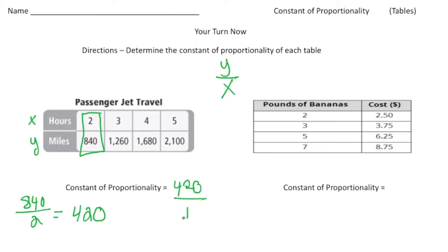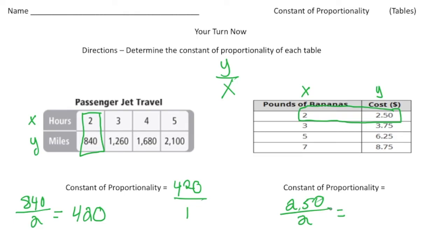Let's do one more — this time we're talking about the cost of bananas. We have pounds of bananas and the cost. Pounds will be the x value and cost will be the y value. I'll use the first set of values: the y value is two dollars and fifty cents, and the x value is 2. When I divide two dollars fifty by 2, that's a dollar twenty-five. So our constant of proportionality is $1.25 over 1.